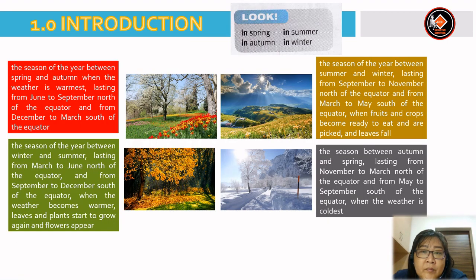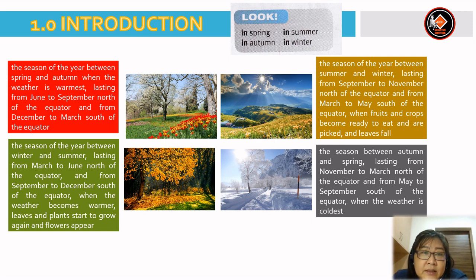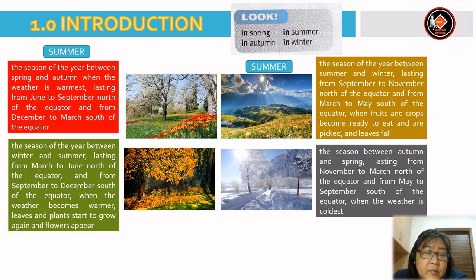Now let's look at spring, summer, autumn and winter. Let's look at the box in red: the season of the year between spring and autumn, when the weather is warmest, lasting from June to September north of the equator and from December to March south of the equator. The answer is summer. Next, the box in green: the season between winter and summer, lasting from March to June north of the equator and from September to December south of the equator, when the weather becomes warmer, leaves and plants start to grow again and flowers appear. The answer is spring.